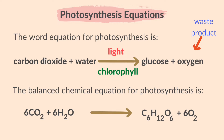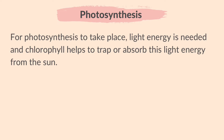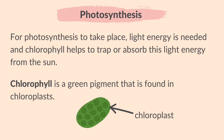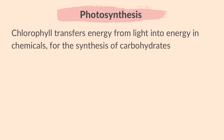Oxygen is also made in this process and released as a waste product. For photosynthesis to take place, light energy is needed and chlorophyll helps to trap or absorb this light energy from the sun. Chlorophyll is a green pigment found in chloroplasts, which is present in a plant cell. Chlorophyll transfers energy from light into energy in chemicals for the synthesis of carbohydrates.